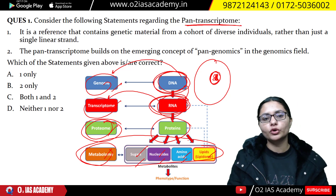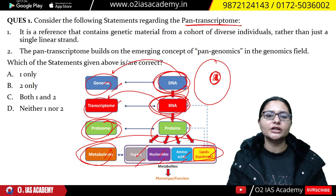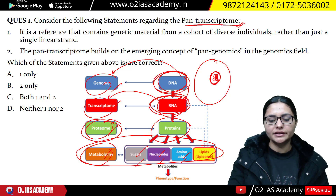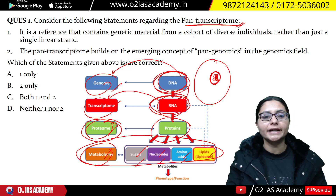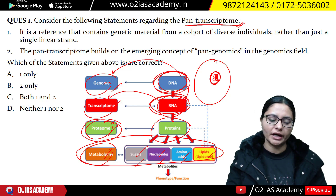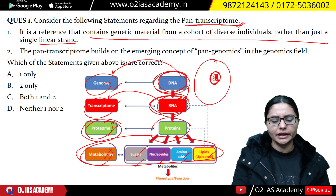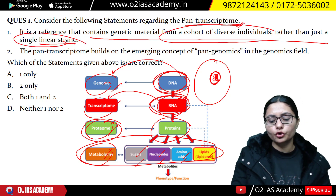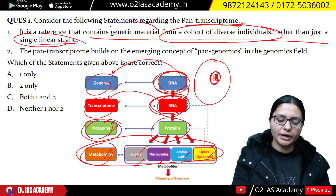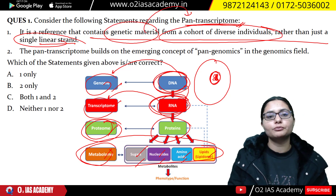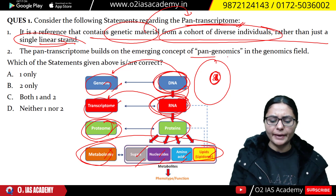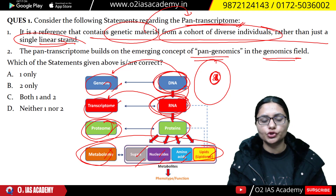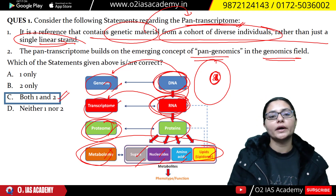These are some terms you need to be clear about, as they appear most frequently in your newspapers. Now, talking about pan-transcriptome: here, Genome and Transcriptome together are called pan-transcriptome. Rather than a linear strand, it represents the genetic material from a group of diverse individuals. Since both statements about pan-genomics are correct, the answer will be both 1 and 2.